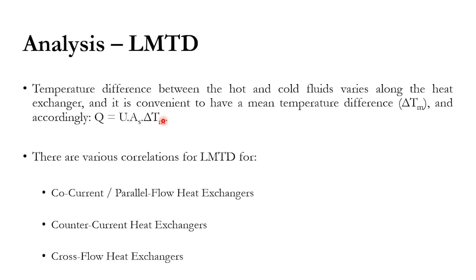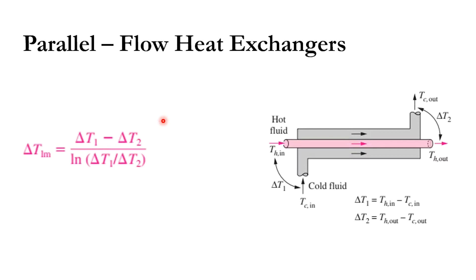Number one is the parallel flow heat exchanger. As discussed previously, the hot fluid and cold fluid enter from the same side and leave from the same side. ΔT1 represents the difference between T_h,in and T_c,in, so ΔT1 = T_h,in − T_c,in. ΔT2 represents T_h,out minus T_c,out. From this correlation, we can see that T_c,out can never be greater than T_h,out.